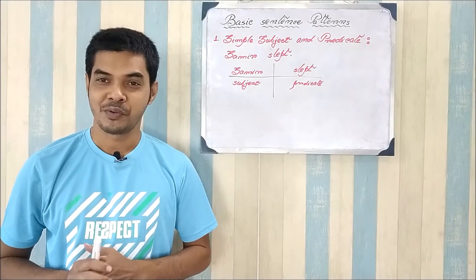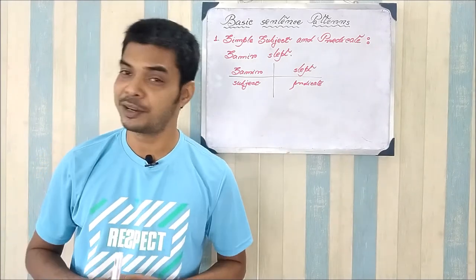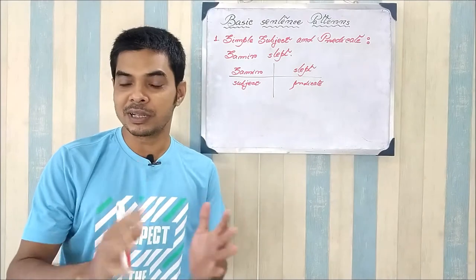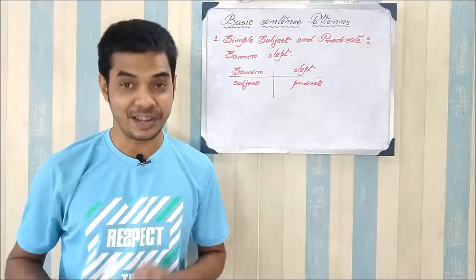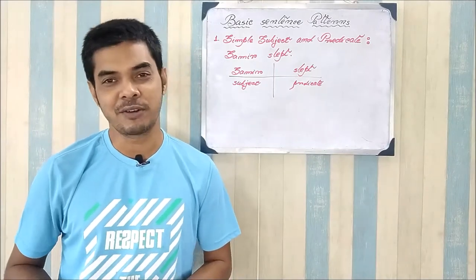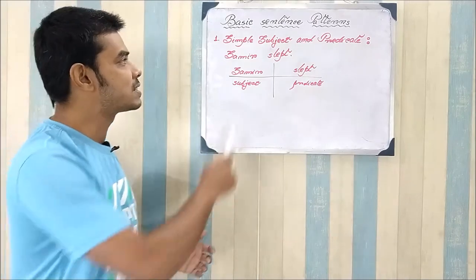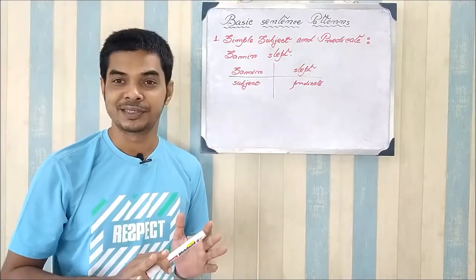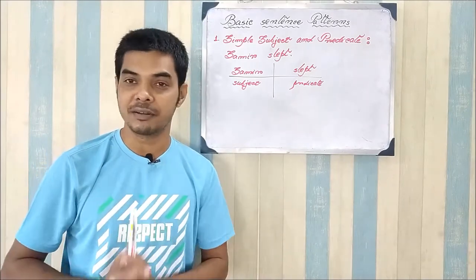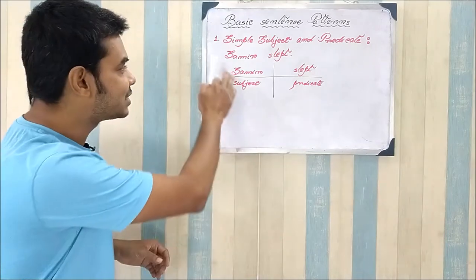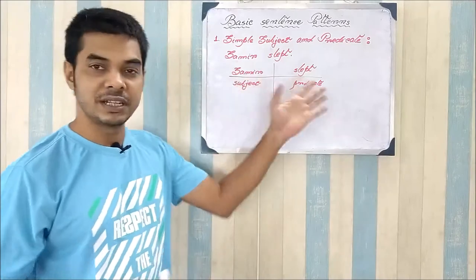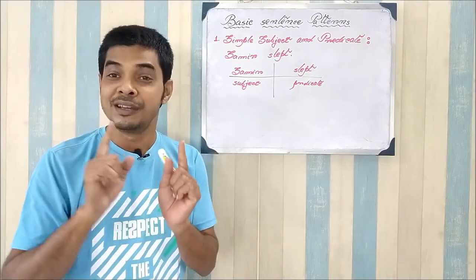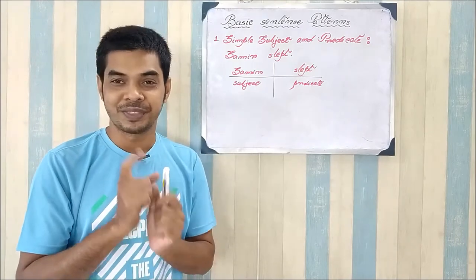Here we are with the discussion of the diagramming of sentences. We will discuss the basic sentence patterns — this is only the beginning, so the basic patterns would be discussed here in this part. The basic pattern of a sentence is simple subject and predicate. We would get a simple subject and a very simple predicate. For example, here we have 'Samir slept' — a very simple sentence with a basic pattern. If we find out the logic between these two parts of speech, that's the diagramming.